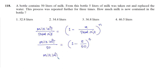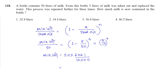Milk left is equal to 50 into (1 minus 1/10) to the power 4, which is 50 into (9/10) to the power 4. You should know that 9 to the power 4 is 6561 and 10 to the power 4 is 10000. So our answer is 50 into 6561/10000, giving approximately 32.8 liters — that is option number 1.